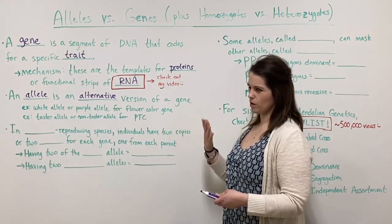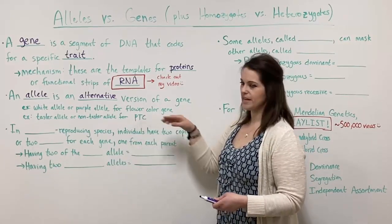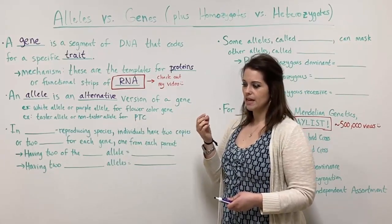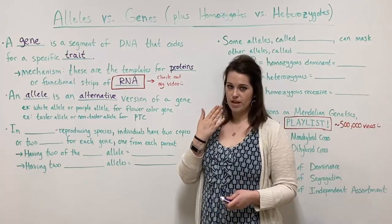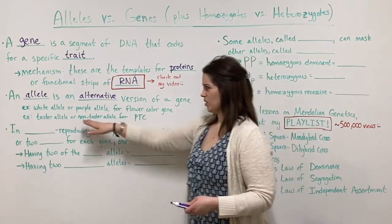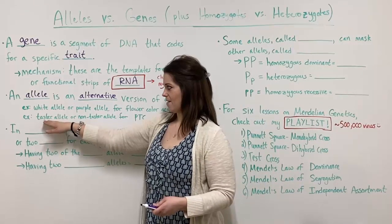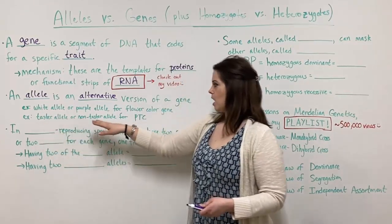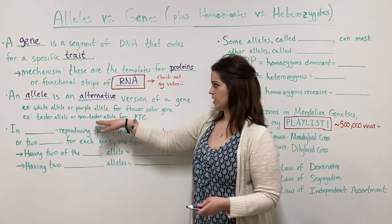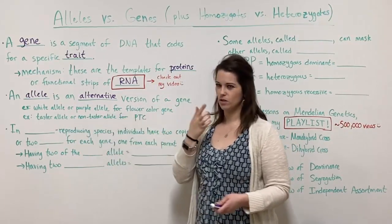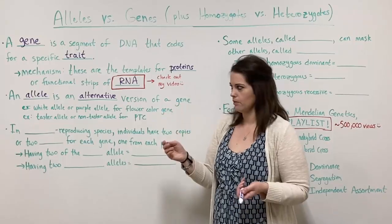Another example, if you want a human example, is tasting the chemical PTC. PTC is a chemical that some people taste as horribly bitter because they have the allele for tasting. There's also a non-taster allele — a person with non-taster alleles can touch PTC to their tongue and not taste anything. So that's another example of alternative versions of a gene.